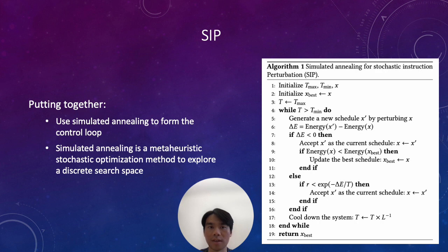We use simulated annealing to form the control loop, which iteratively improves the kernel throughput until a predefined search budget is exhausted. Simulated annealing is a meta-heuristic stochastic optimization method to explore a discrete search space. It simulates a physical process and intuitively converges to schedules with lower runtime. As shown on screen, it defines a search loop where every iteration a new schedule is generated, measured, and accepted with some certain probability, then moves into the next iteration.